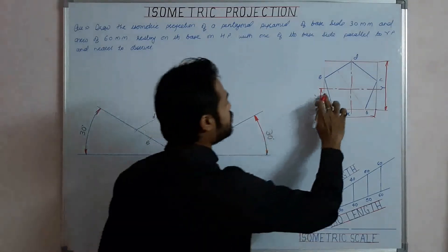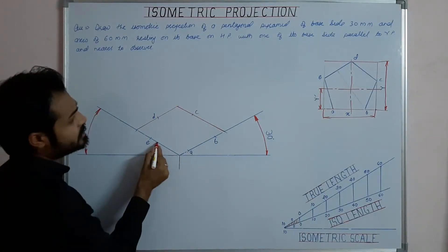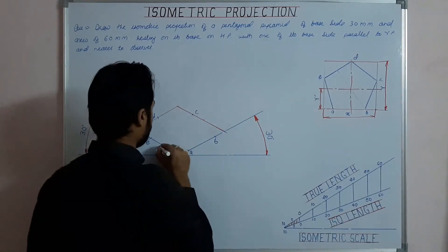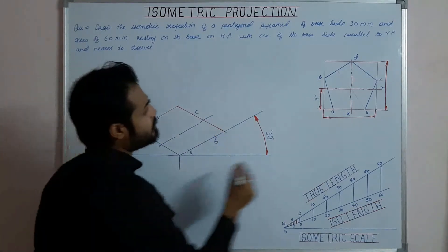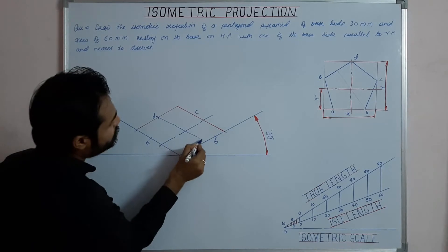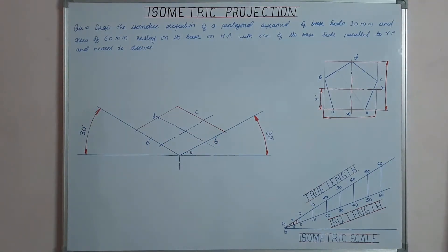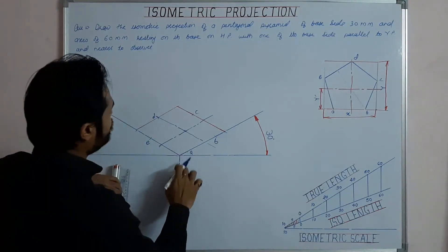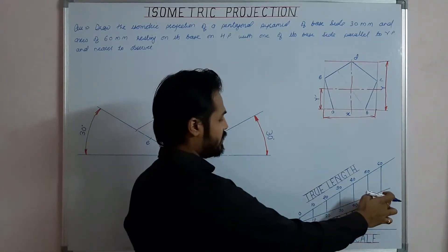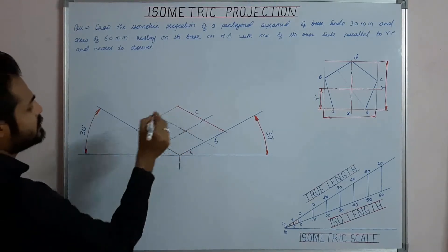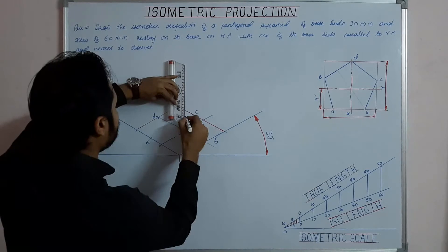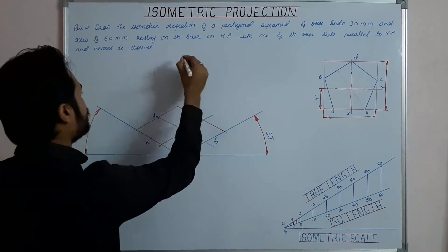We draw the axis by taking y-dash along the second iso-axis, drawing a center line parallel to the second iso-axis from d to the center point. Next, we draw the solid axis as a line parallel to the third iso-axis. The axis length is 60 mm, so we take iso-60 using the isometric scale and draw a vertical line of length iso-60 from the center. This gives us the apex point.